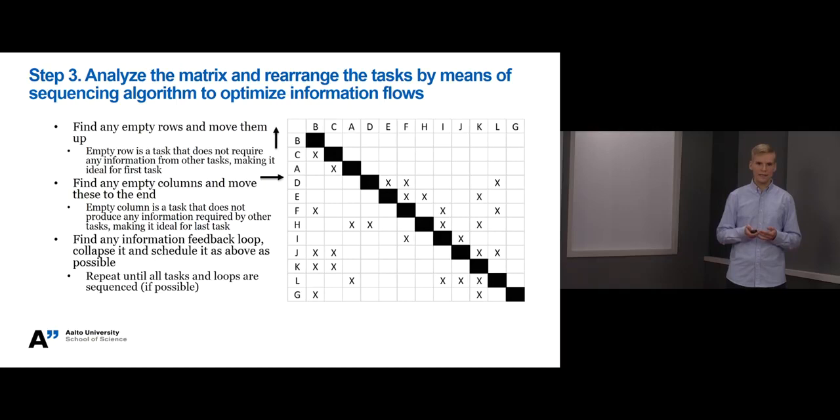Next, we can see that task L produces information to tasks D, F and J. So, we should move it before them to move the cross marks closer to the diagonal and below it and to minimize any information feedback loops.